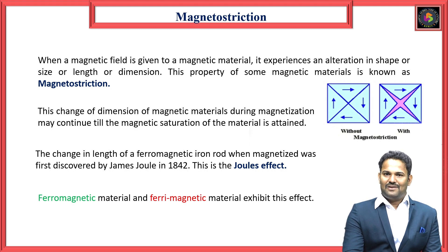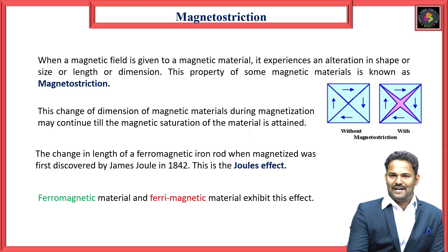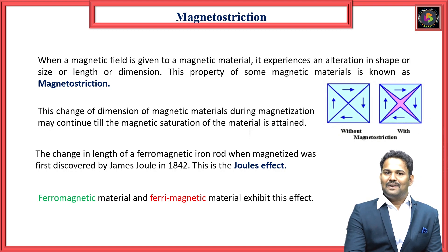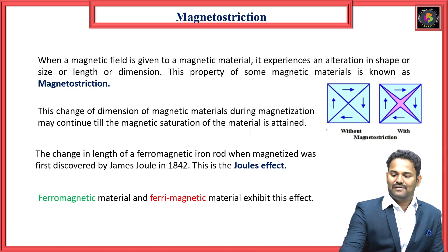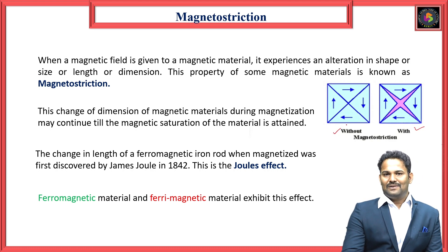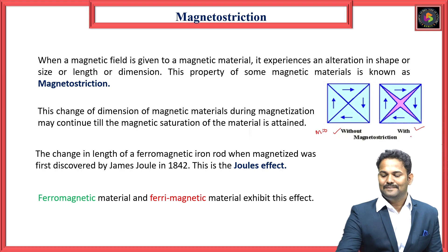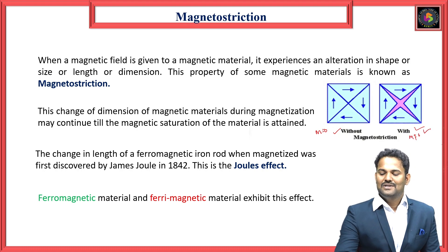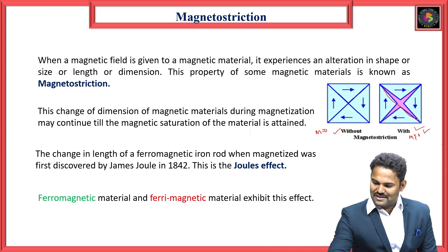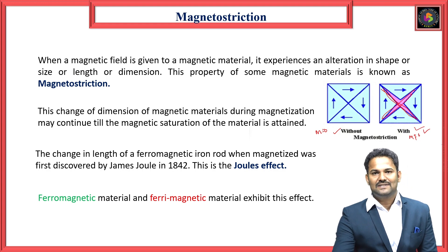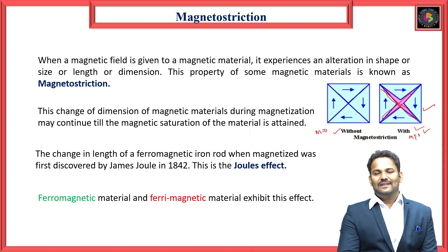Generally, magnetostriction can be seen in ferromagnetic and ferrimagnetic materials. The change in dimension of a magnetic material during the magnetization process continues until the material becomes completely magnetized. Here, if you see the diagrams — one is with a magnetic field applied (M ≠ 0) and another without magnetization (M = 0). The changes in size and shape of each domain can be seen, and due to these domain changes, magnetostriction is developed in the magnetic material.